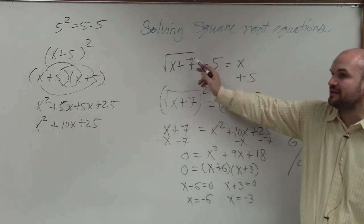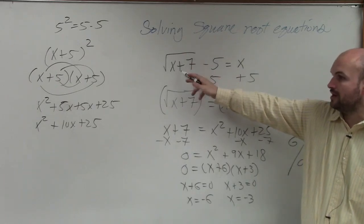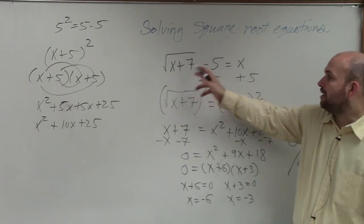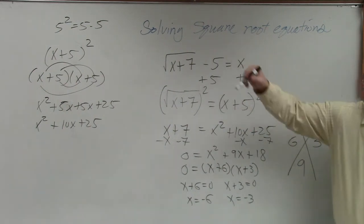So if we go back and plug in our answers back into our equation, let's plug in negative 6. Negative 6 plus 7 is 1. The square root of 1 is 1, right? 1 minus 5 is going to be negative 4. And if I plug in a negative 6 for here, that's not going to work.